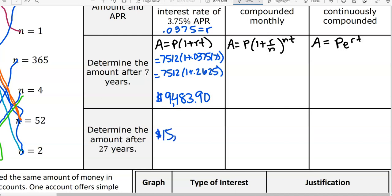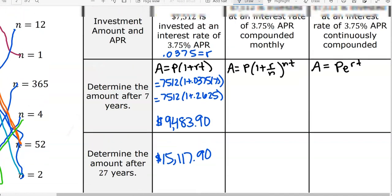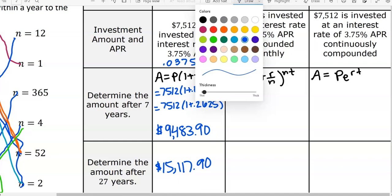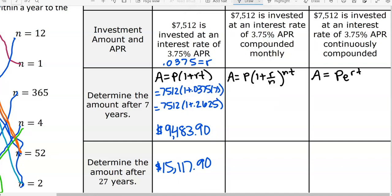What do you have for 27 years? Good. 15,117.90. We go with that?